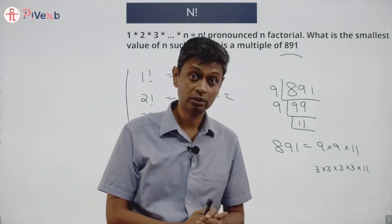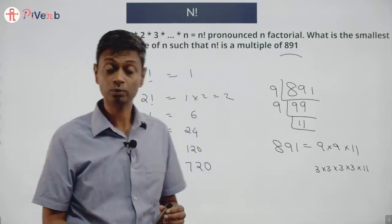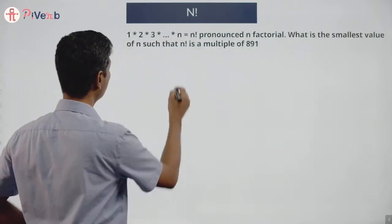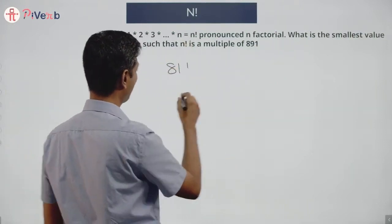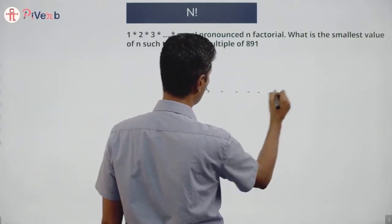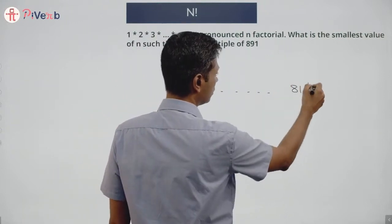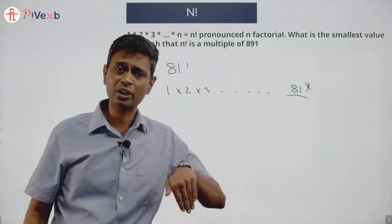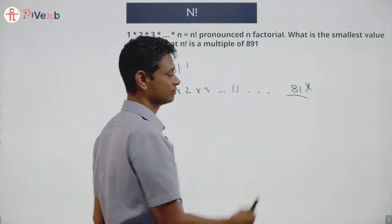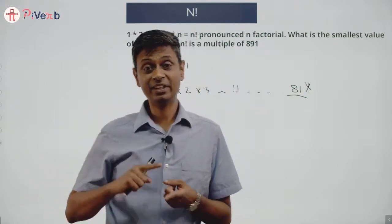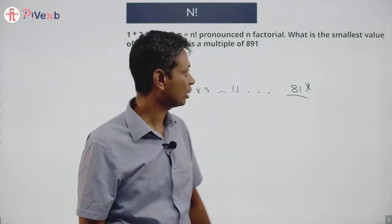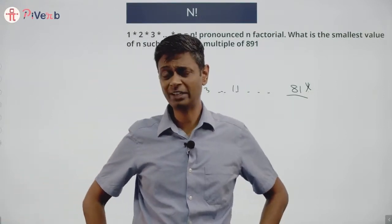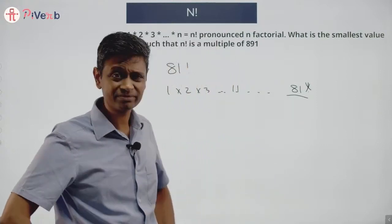3 into 3 into 3 into 3 into 3 is 81, so maybe 81 factorial will work. Going to 81 factorial — 1 into 2 into 3 all the way to 81 — this number is definitely a multiple of 81. Along the way I would have crossed 11, so 81 factorial is a multiple of 81 into 11, which is 891. So n could be 81, but I feel I've gone too high.